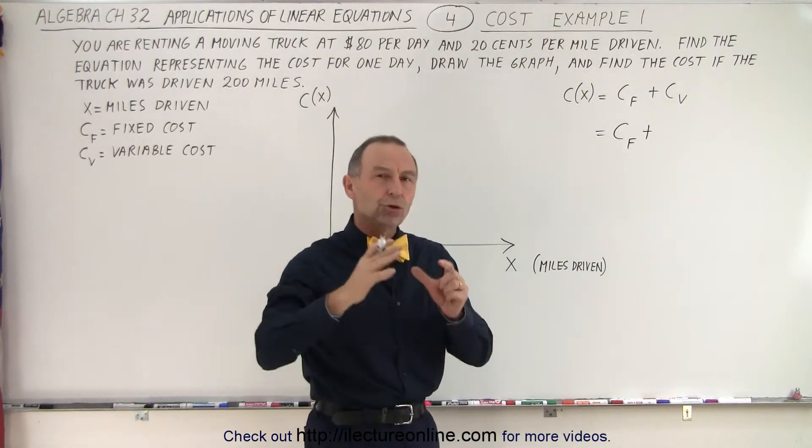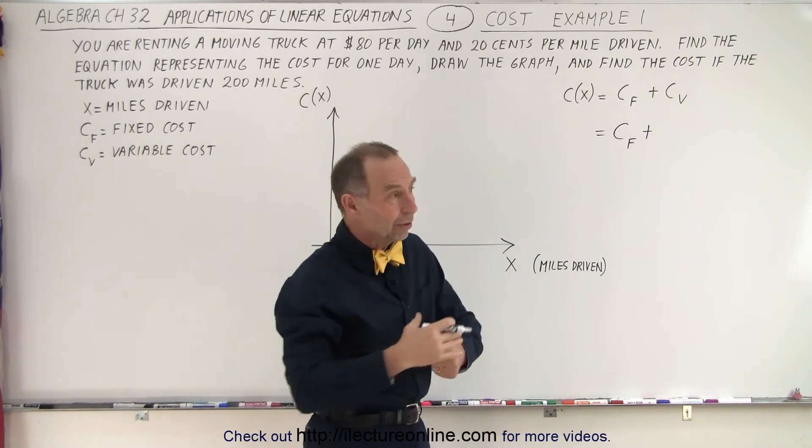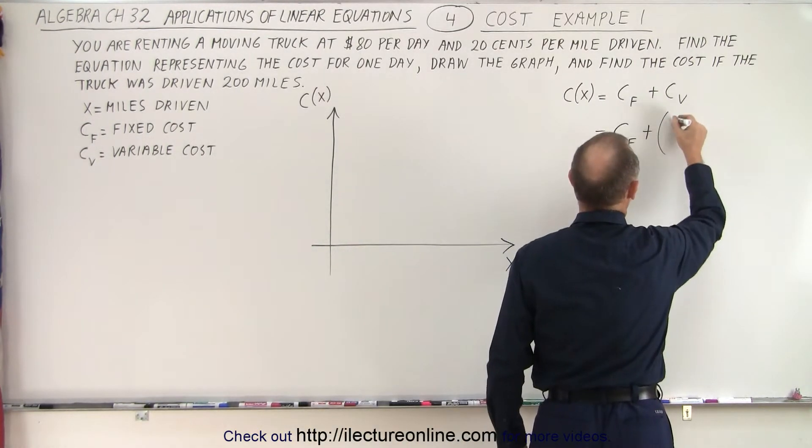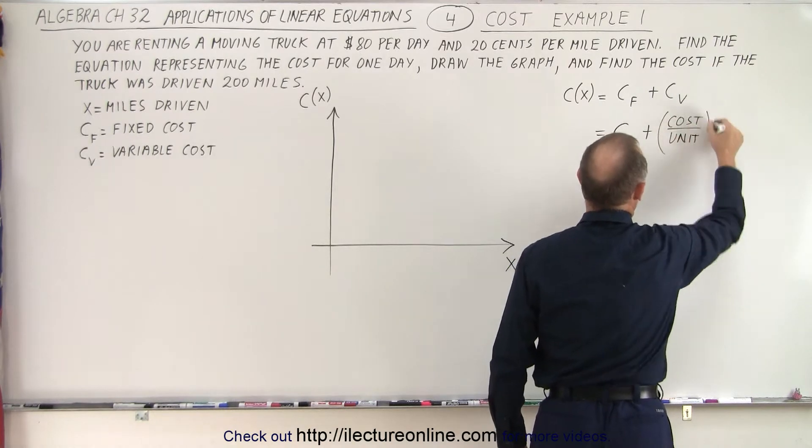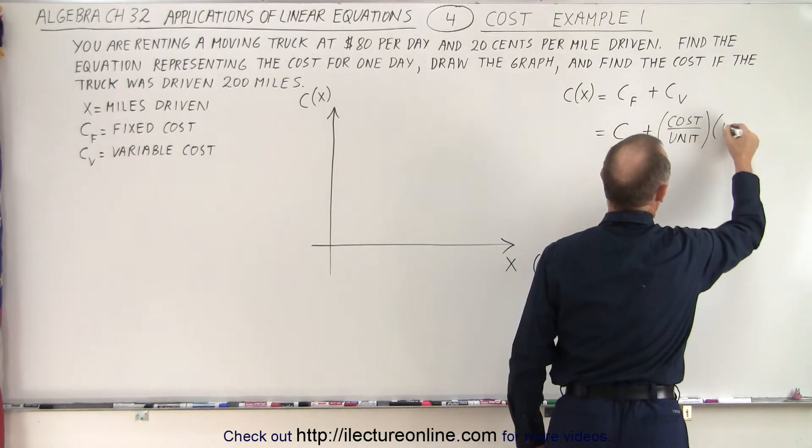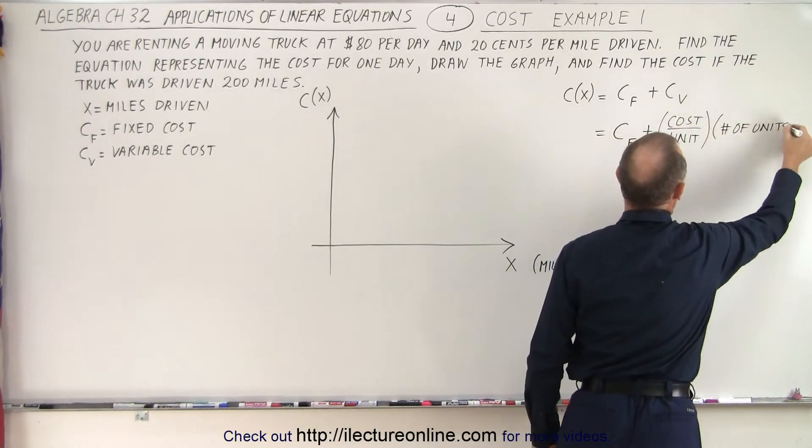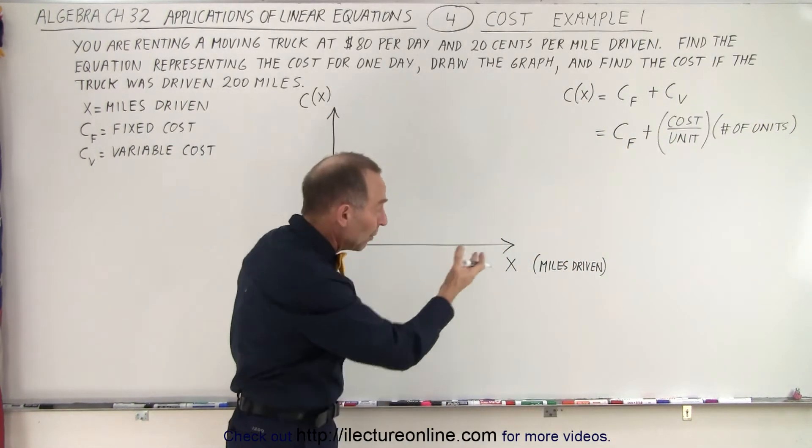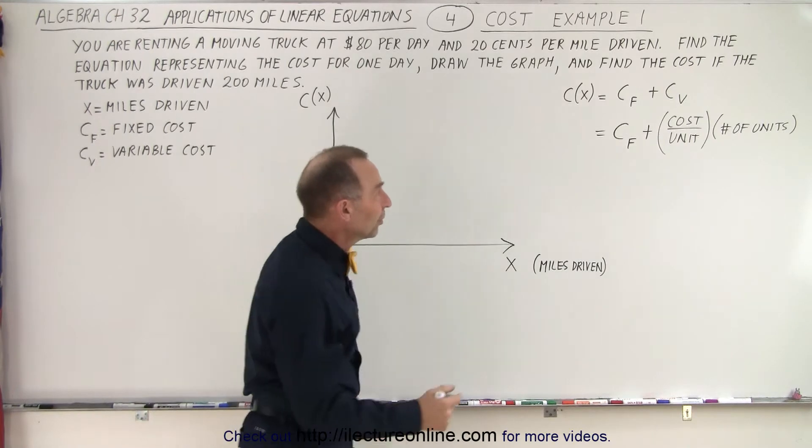But the variable cost can be written as this. It's going to be the cost per unit. Now in this case, the unit is the mile driven. But in this case, we'll write it down as simply the cost per unit. And then we multiply it times the number of units. So here we use the general term unit. But in this case, we represent it by miles driven.